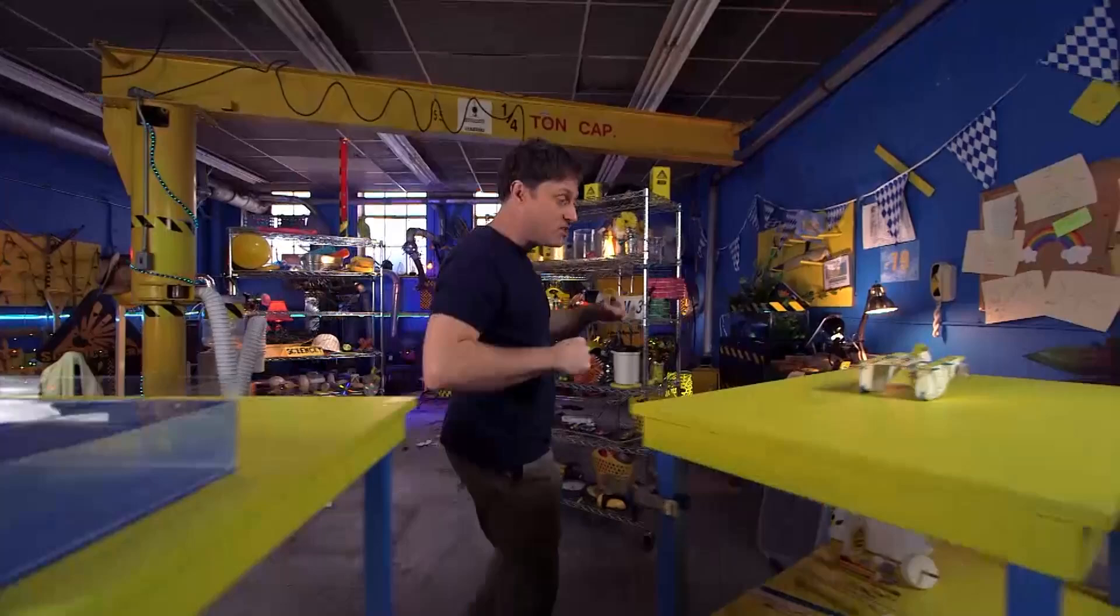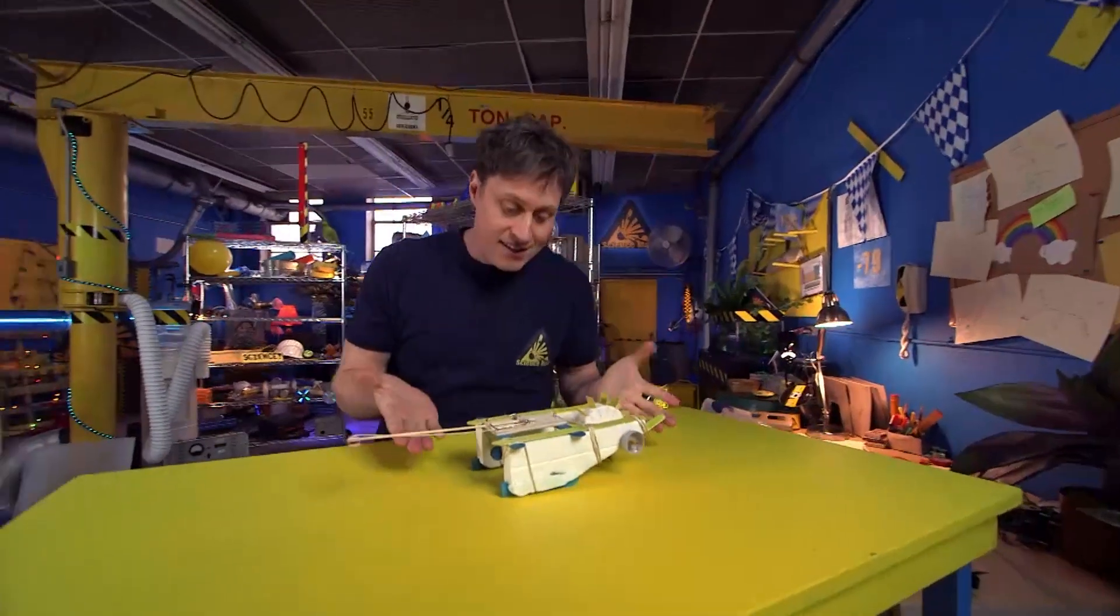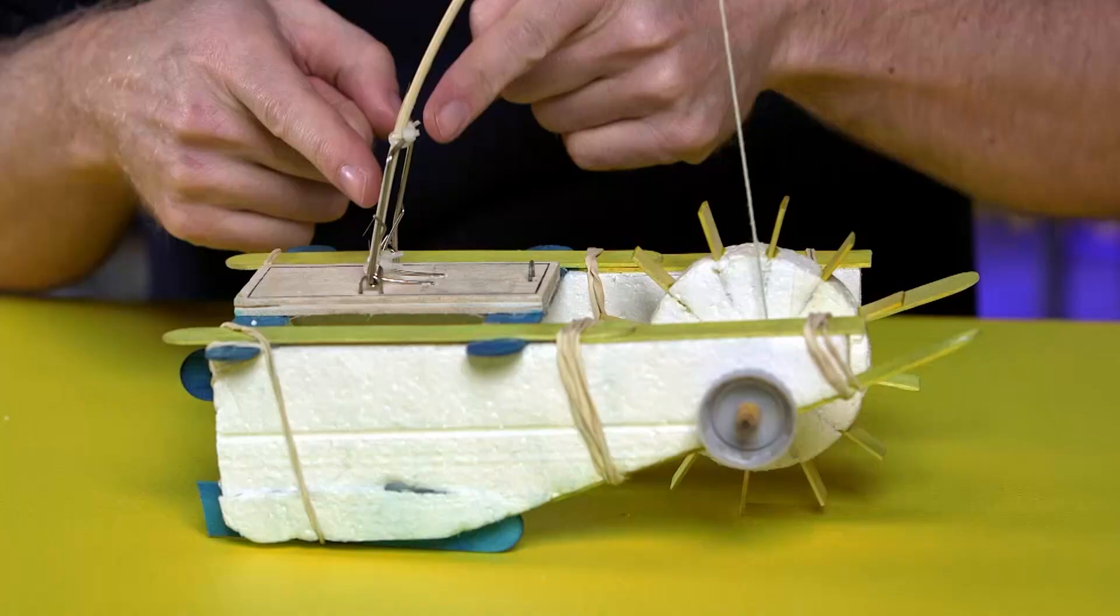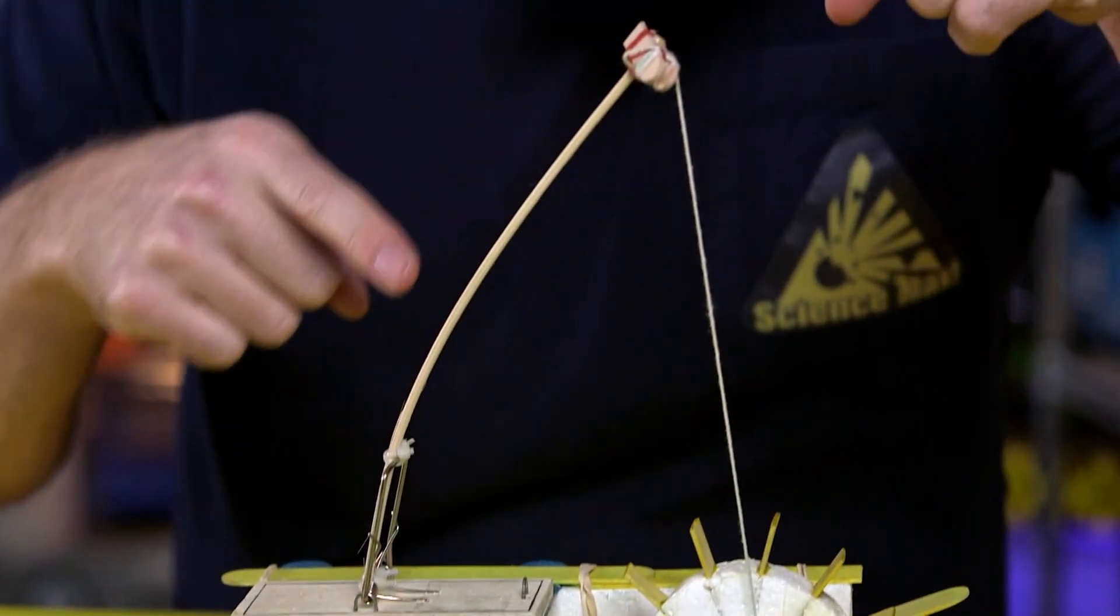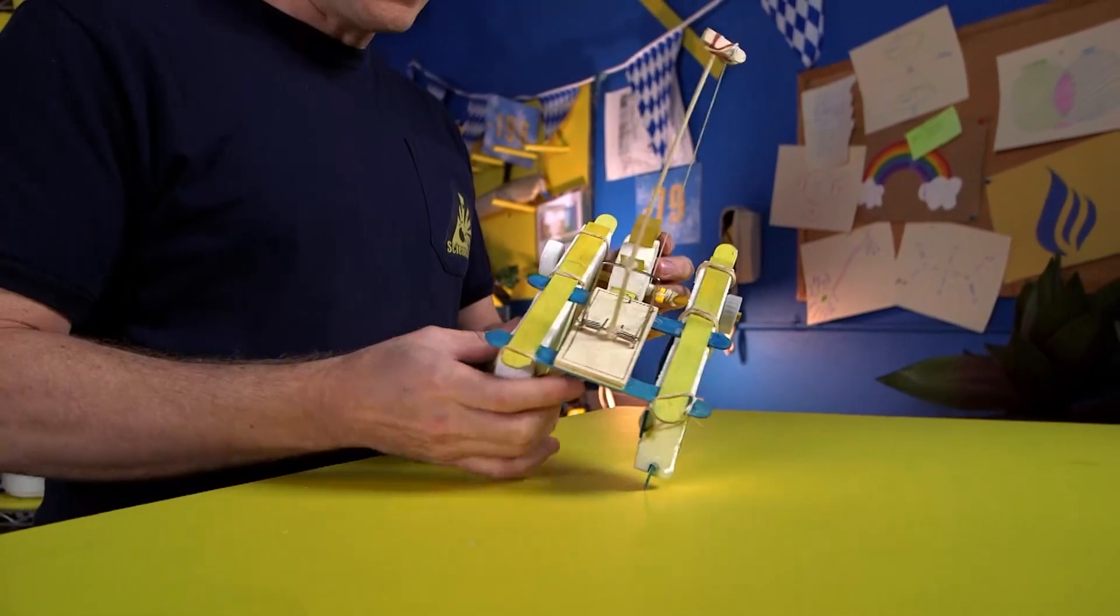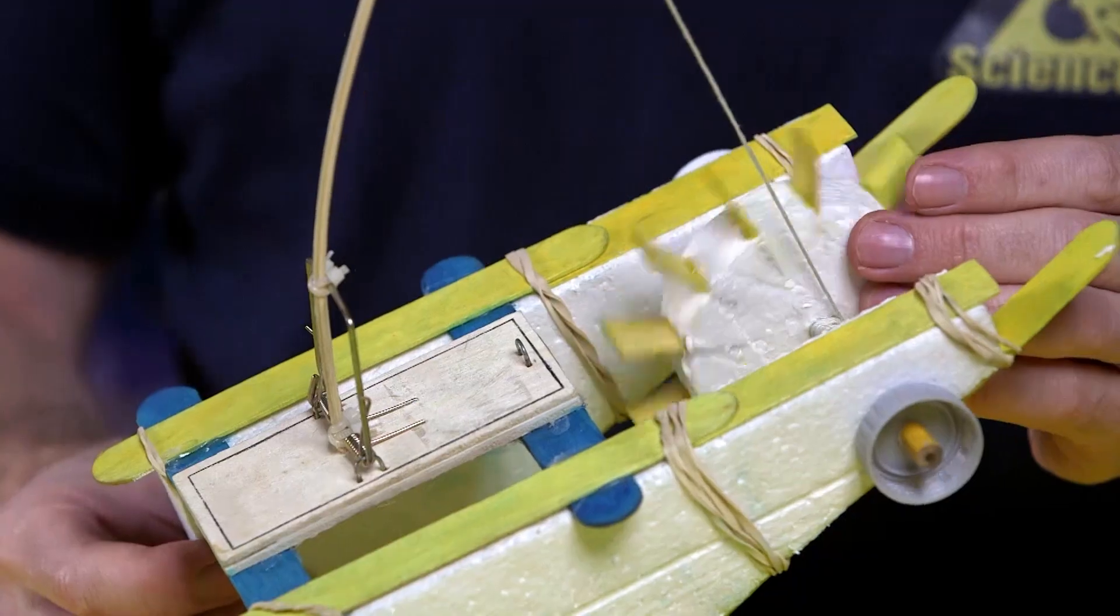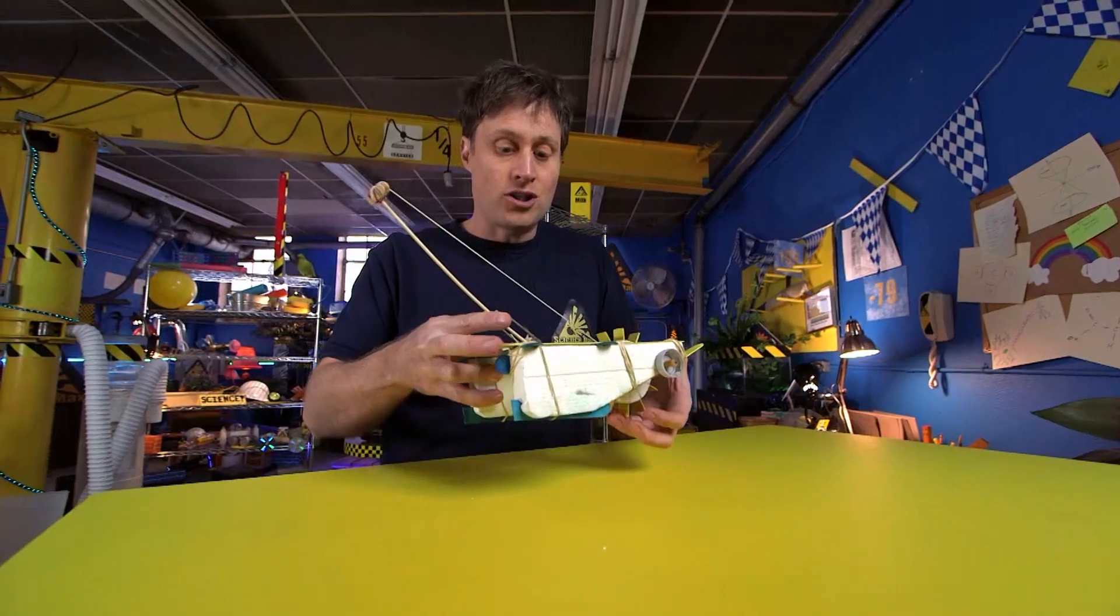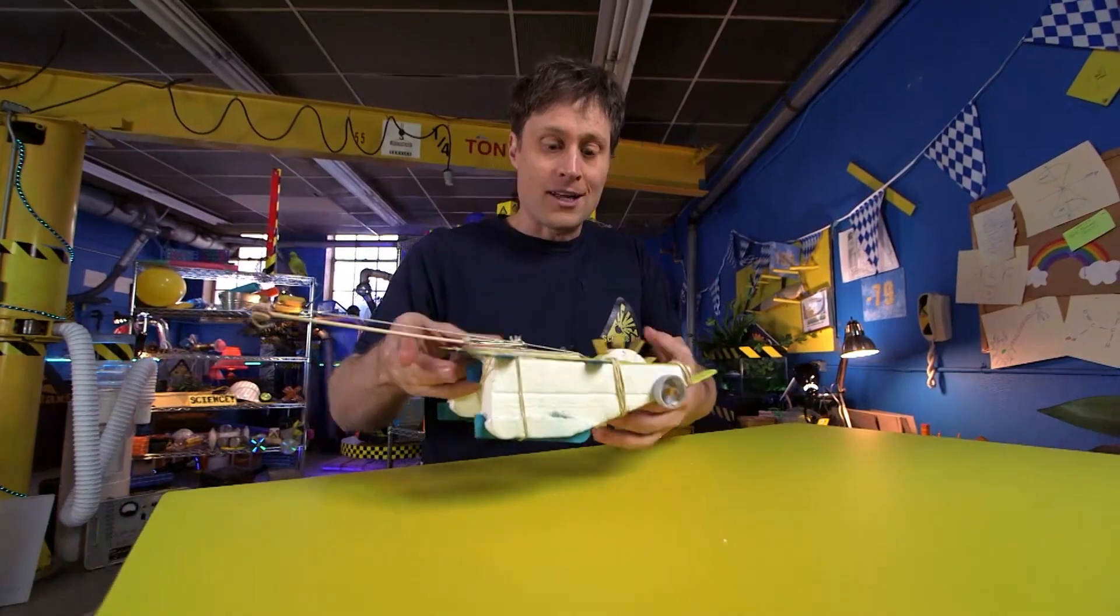What we're going to do is build this, this is the mousetrap boat and it works like this. I've got the mousetrap and it's attached to a long arm that arm has a string on it and it goes around the paddle wheel and as the mousetrap unwinds the paddle wheel spins like that which pushes the boat forward.